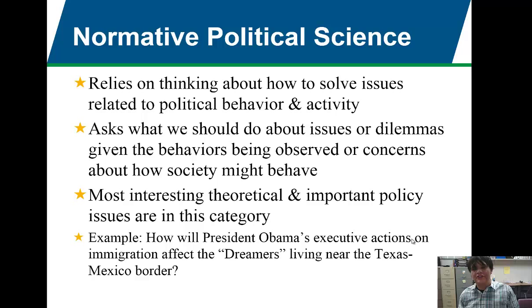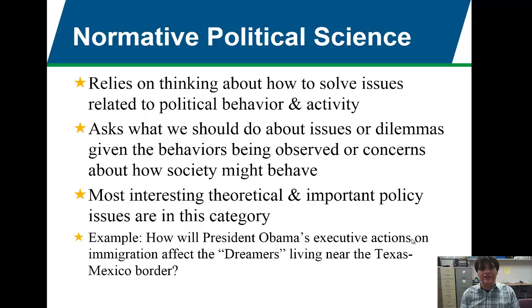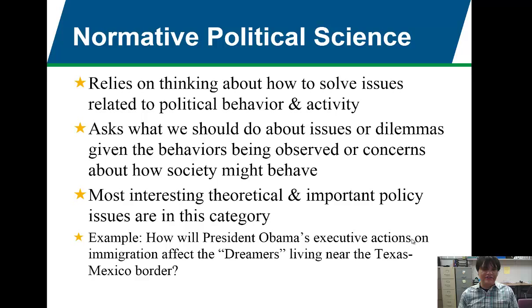One example is: how will President Obama's executive actions on immigration affect the dreamers living near the Texas-Mexico border? Normative political science is forward-thinking and considers how to act on issues given the values and beliefs of certain people. So empirical and normative political science are both under the umbrella of political science but they're very different things. When we look forward this semester and talk about the Texas legislature, the governor, the Texas courts, we're going to be dealing with both empirical analysis — the facts behind the institutions — as well as the normative: what are the values and beliefs of those institutions. I can guarantee there will be a question on your test about the difference between empirical and normative political science.